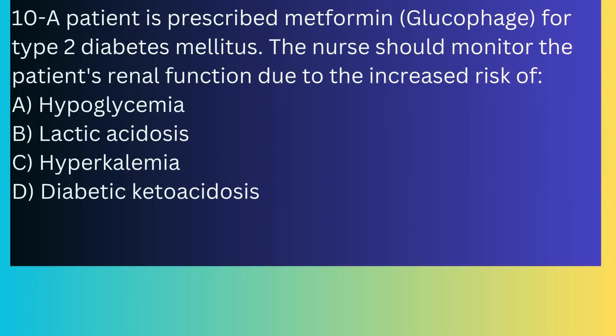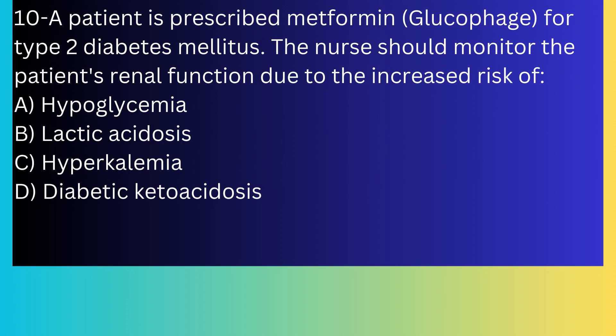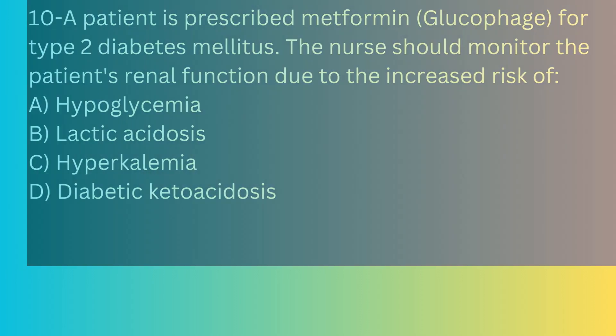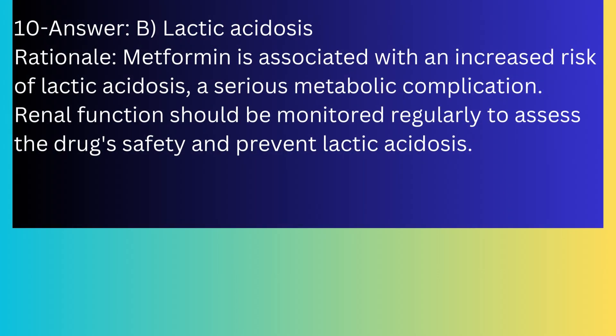Question number ten: A patient is prescribed metformin (Glucophage) for type 2 diabetes mellitus. The nurse should monitor the patient's renal function due to the increased risk of: A) Hypoglycemia, B) Lactic acidosis, C) Hyperkalemia, D) Diabetic ketoacidosis. The answer is B, lactic acidosis. Metformin is associated with an increased risk of lactic acidosis, a serious metabolic complication. Renal function should be monitored regularly to assess drug safety and prevent lactic acidosis.